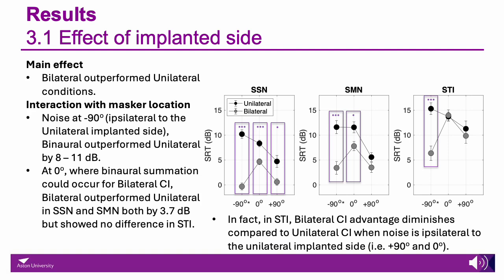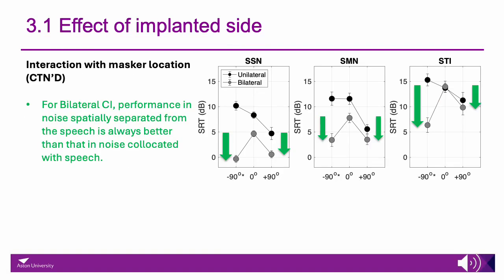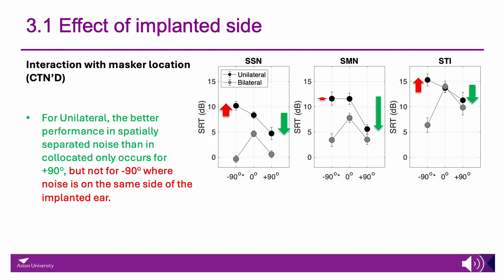Specifically, if you look at the zero-degree single talker interferer condition, the unilateral and bilateral cochlear implants perform very similarly. Looking at the bilateral implant condition alone, performance is worse when the noise is co-located with the speech compared to when the noise is spatially separated. For the unilateral condition, we do not see spatial release from masking when the noise is on the same side as the implanted ear, so performance at negative 90 degrees is the same or even worse compared to when the noise is co-located with the speech.